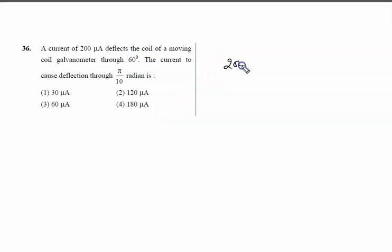A current of 200 microamperes deflects the coil of a moving coil galvanometer through 60 degrees. The current to cause deflection through π/10 radians—how much current is required for the moving coil galvanometer?